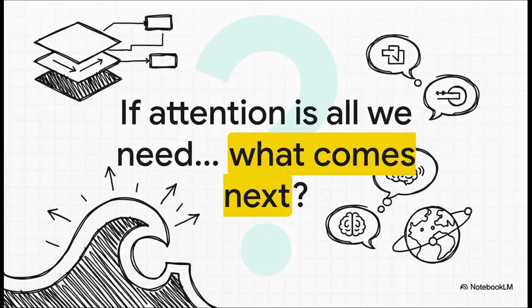So, when you boil it all down, this paper didn't just build a slightly better translation model. No, it gave us a completely new blueprint for how machines can understand language, period. It's the direct ancestor, the DNA of models like GPT-4, Gemini, you name it. All the big models changing our world. Which really leaves us with a huge question, doesn't it? If this is what happened when we figured out that attention is all we need, what on earth comes next?